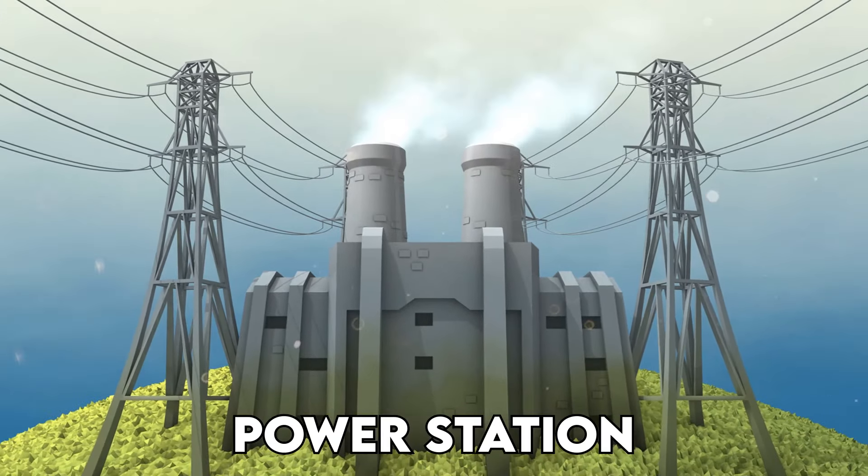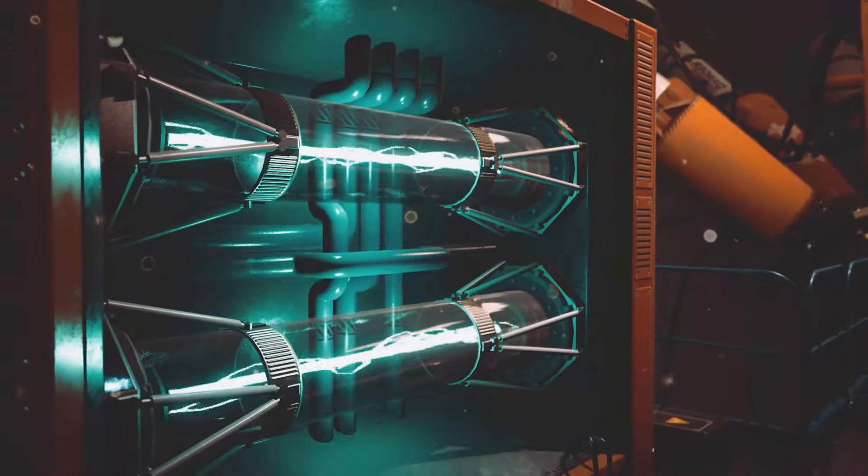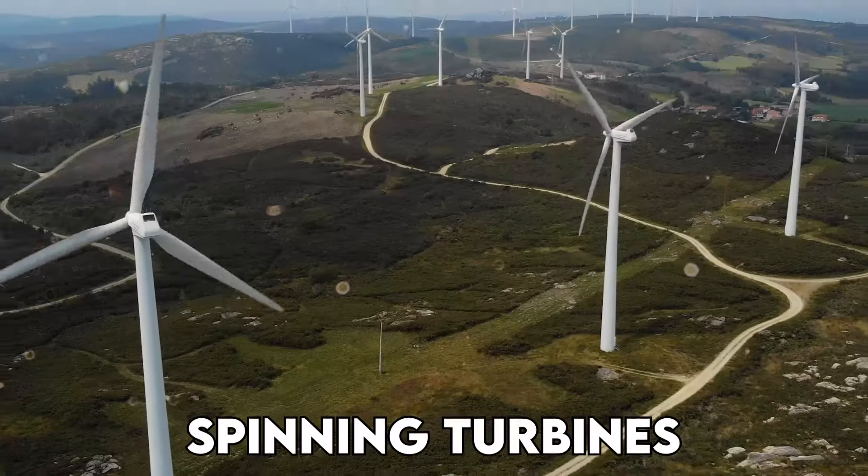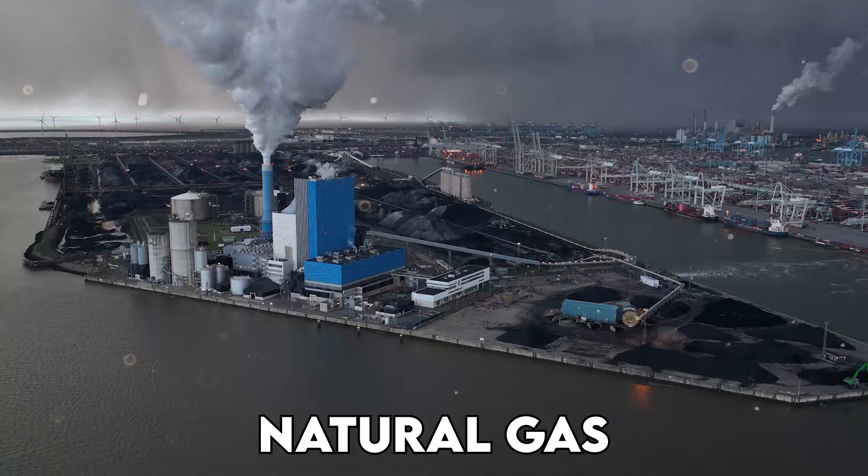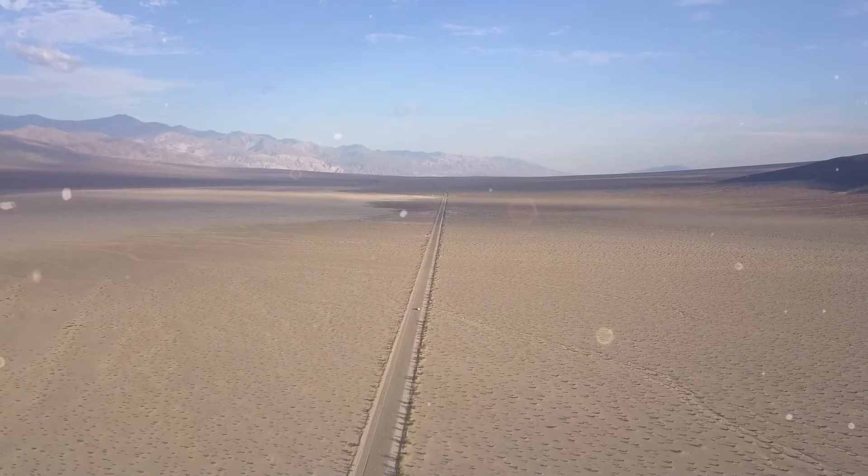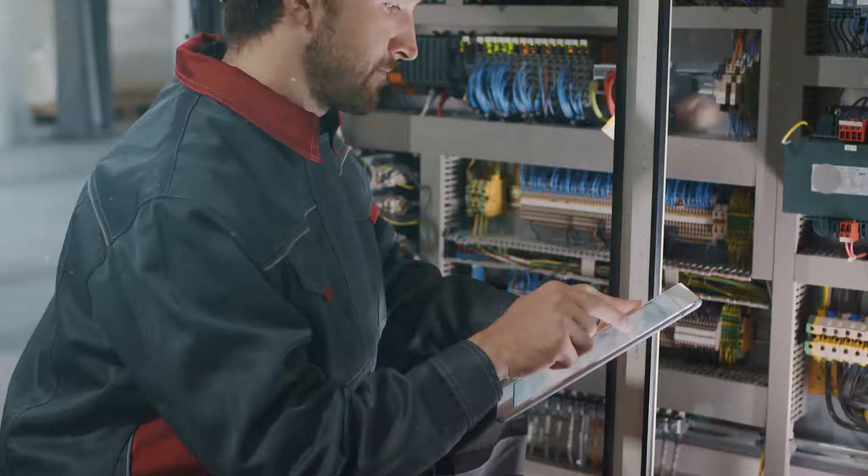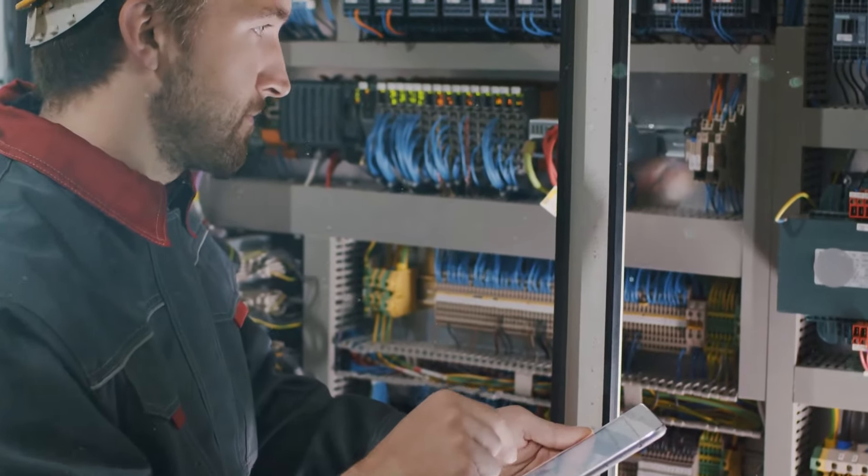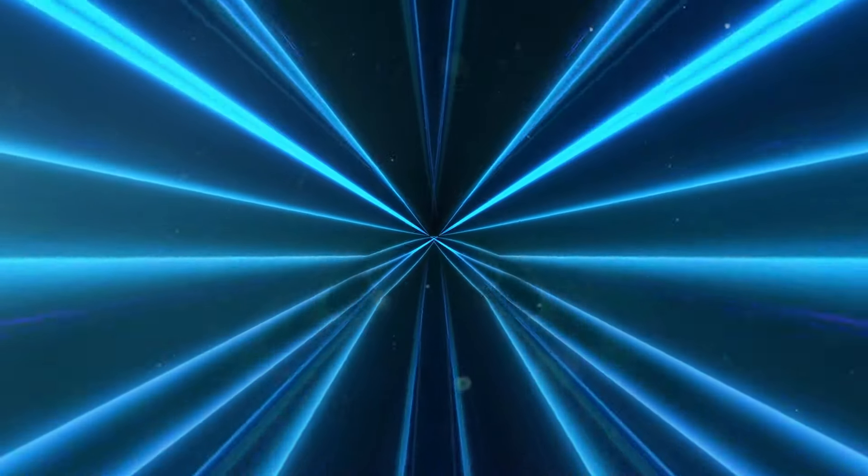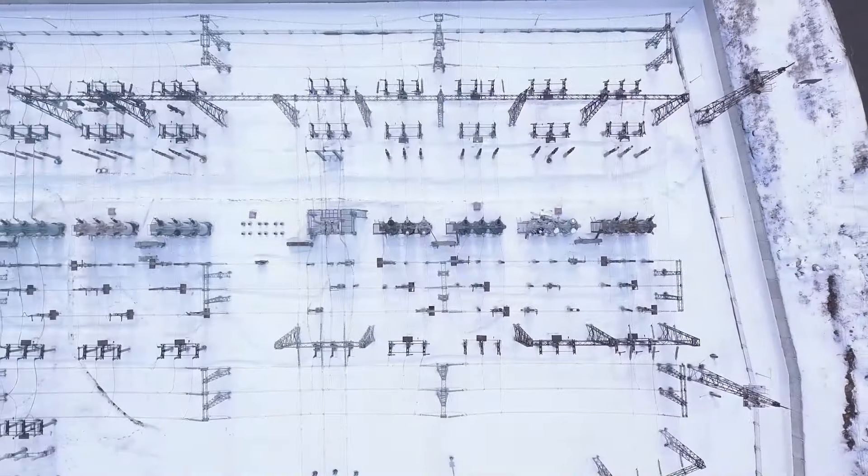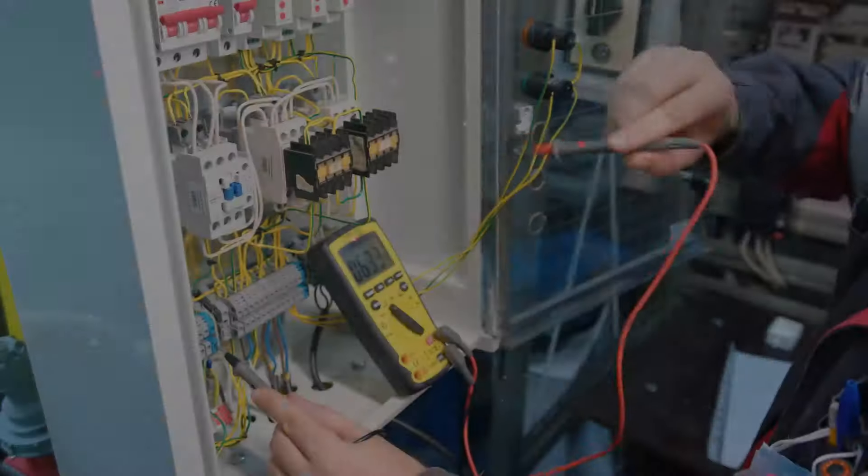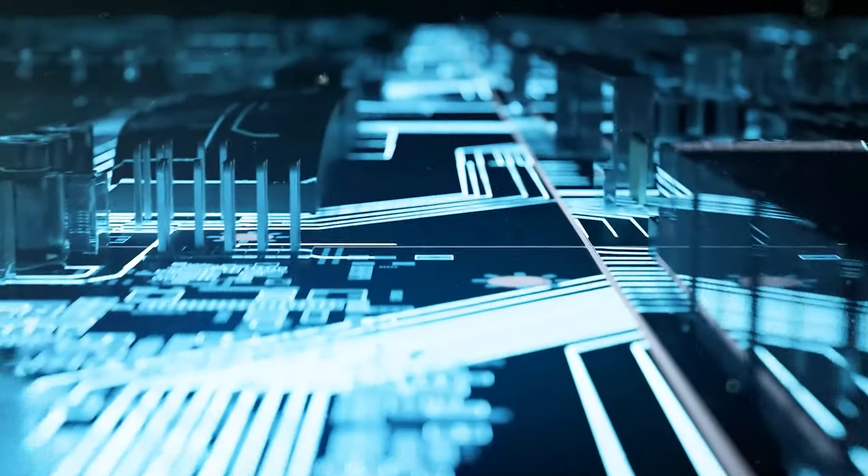It all starts in a power station. Here electricity is born through the magic of spinning turbines, often driven by fuels like coal, natural gas, or the forces of nature like wind and sunlight. The electricity generated isn't quite ready for everyday use. It's got to travel a long way so it needs a boost. That's where step-up transformers come in. They crank up the voltage, which means the electricity can travel more efficiently without wasting energy as heat.